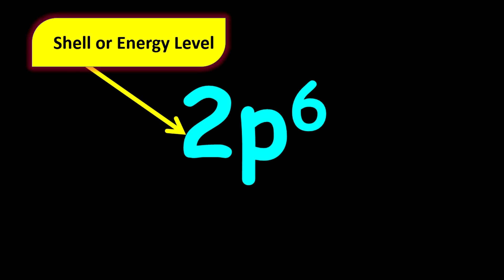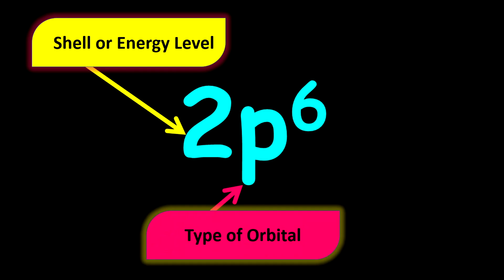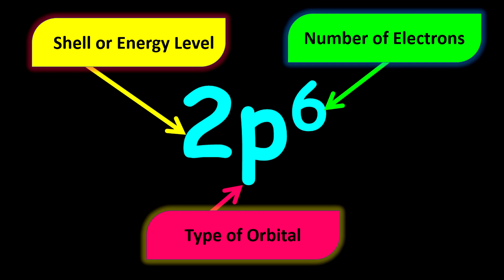There are three things that you must know. For example, 2P6 represents a part of an electron configuration. The first number always represents the shell or the energy level where you can find these electrons. The letter, for example P, represents the type of orbital. And the last number, 6, represents the number of electrons on that particular type of orbital.